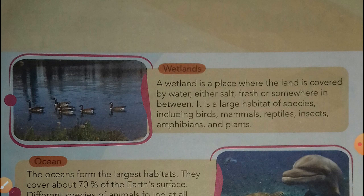Some aquatic animals live in wetlands. A wetland is a place where the land is covered by water — either salt, fresh, or somewhere in between. It is a large habitat for many species including birds, mammals, reptiles, insects, amphibians, and plants.